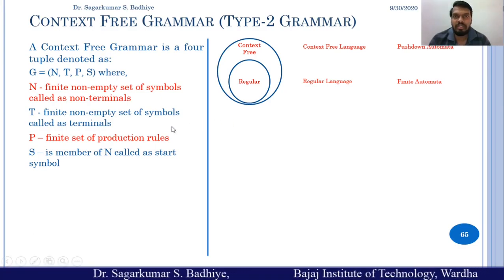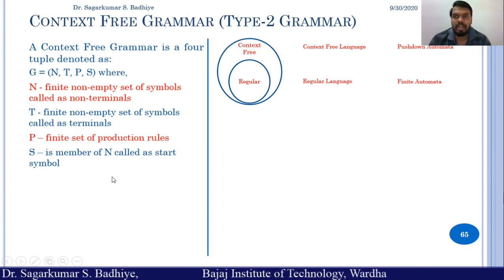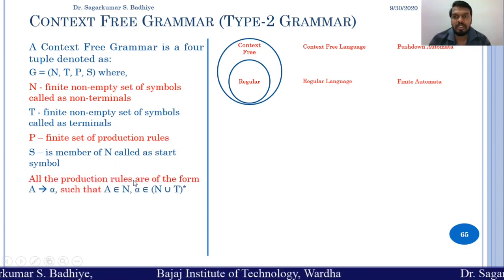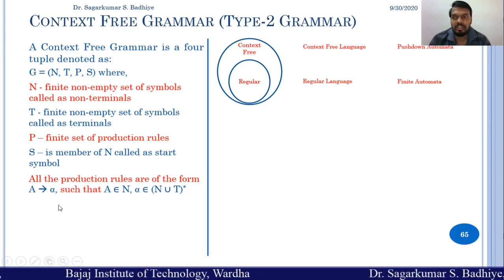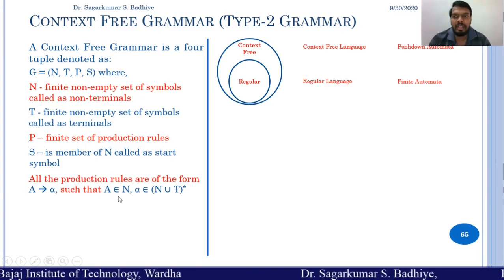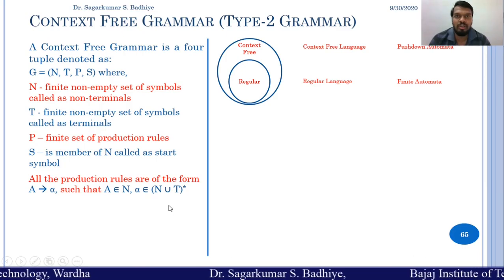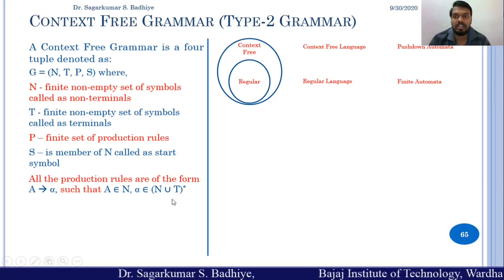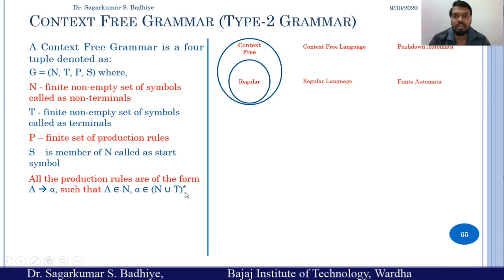In context free grammar, the following restrictions apply to production rules. All production rules should follow the structure: A derives to alpha, such that A is any non-terminal and alpha is any combination of non-terminals and terminals — that is, A belongs to N and alpha belongs to (N ∪ T)*, the closure.